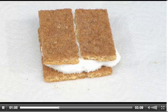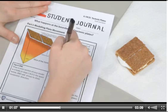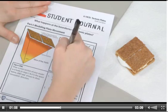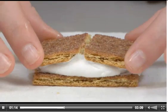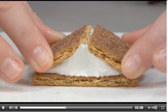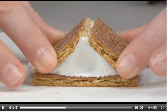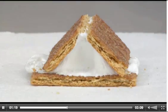Label the cross-sectional diagram in the student journal. Now you are ready to model a convergent boundary — move the two small crackers together to form an upside-down V. Discuss events that can occur in the continental crust when plates collide at tectonic plate boundaries.